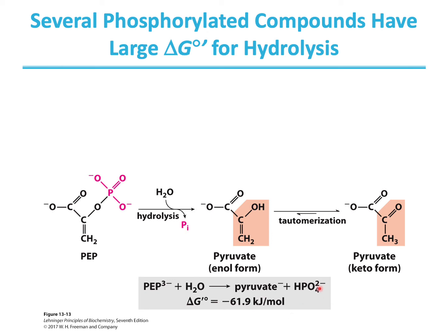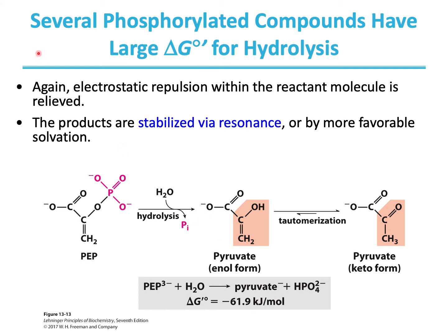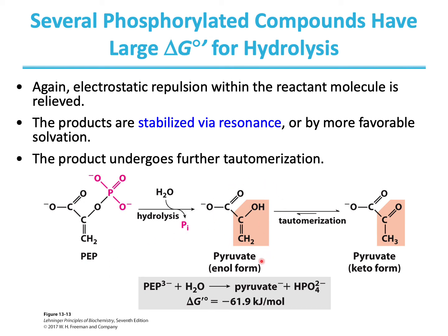This large free energy is because of electrostatic repulsion within the reactant molecule that gets relieved as a result of hydrolysis. The product phosphate is stabilized via resonance and gets solvated much more than the reactant. The other product, pyruvate, that comes from phosphoenolpyruvate undergoes tautomerization — pyruvate is in enol form and can go to keto form, constantly interchanging between these two forms. These are the driving forces for the hydrolysis of phosphoenolpyruvate.